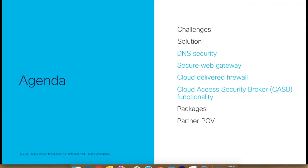From an agenda perspective, I want to walk you through some of the challenges we have today, what the solution looks like, and the different components of Umbrella, which include DNS security, secure web gateway, cloud-delivered firewall, and the CASB functionality. We'll also talk about some of the packages that come with Umbrella, and since I'm on the partner side, I want to touch a bit on what you can do as a partner to help your customers with a quick proof of value.